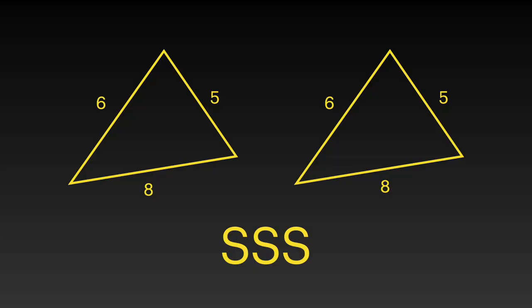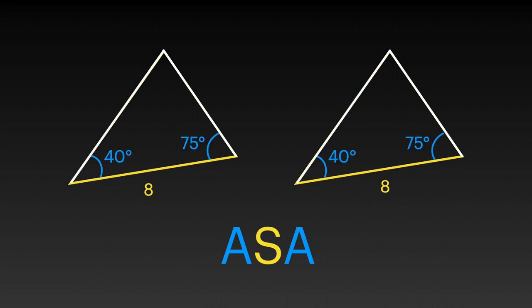SSS means all three sides are the same. SAS is two sides and an included angle. ASA, it's all about the angles, baby - two angles and an included side.